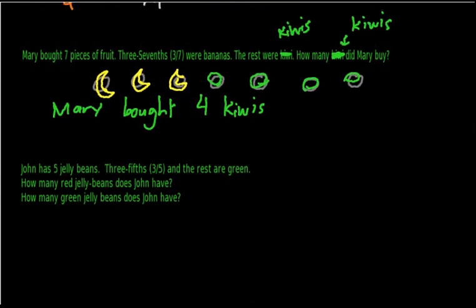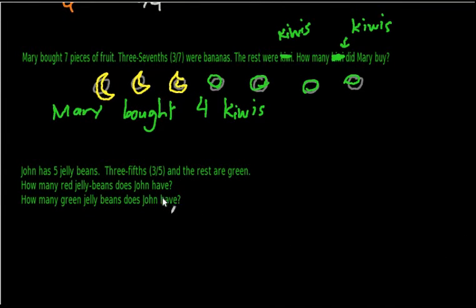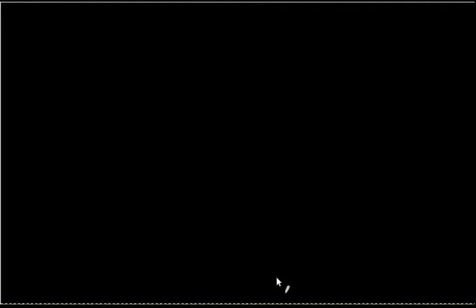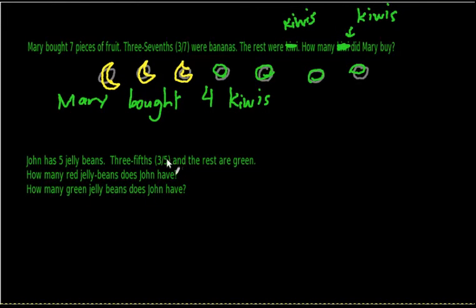A jelly bean problem — and this will be the last problem we do in this video. It says that John has five jelly beans. Three-fifths are red and the rest are green. How many red jelly beans does John have? How many green jelly beans does John have?